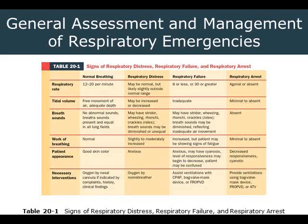In respiratory failure, we are definitely outside the 8 to 30 range on respiratory rate. Inadequate tidal volume — you may hardly be able to see the chest move at all. They've definitely increased their work of breathing but are probably showing signs of fatigue — they may be slouching over, unable to hold themselves upright, or leaning on their arms. They usually have a very anxious appearance and then start to become a decreased level of consciousness, with possible confusion and cyanosis. This is somebody who will probably need assisted ventilations, possibly with CPAP or a bag valve mask.